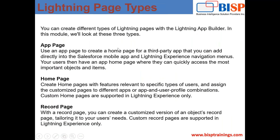Now let's discuss lightning page types. There are three types of lightning pages: app pages, home pages, and record pages. With the help of an app page, we can create a homepage for a third-party app, and you can add it directly into the Salesforce mobile app and Lightning Experience navigation menus. When we build an app page, we can also add it into our lightning applications.